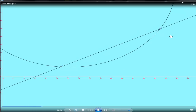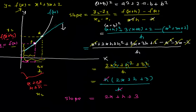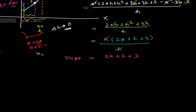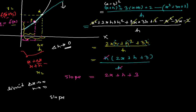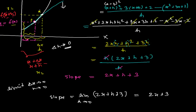When this delta x or h distance becomes very short, almost close to zero, we get the derivative at that particular point. For this we introduce the limit: we take the limit as h tends to 0. At that point, the slope is no longer of the secant line but of the tangent. Taking the limit as h → 0 of (2x + h + 3), as h becomes 0, we get 2x + 3.